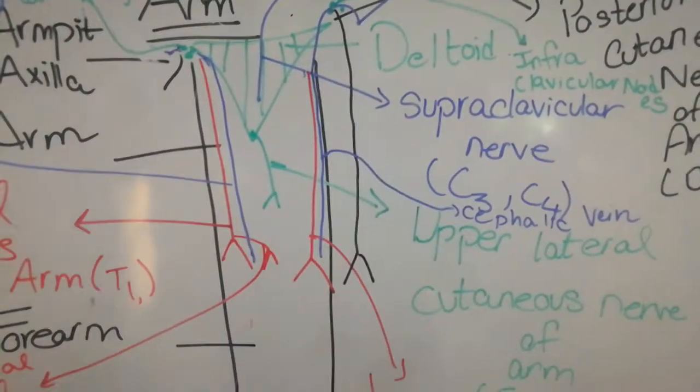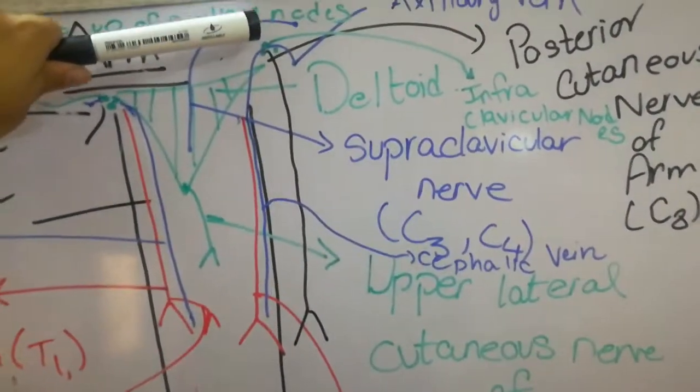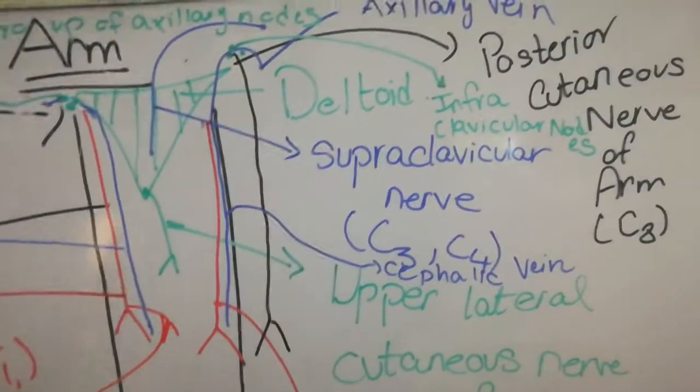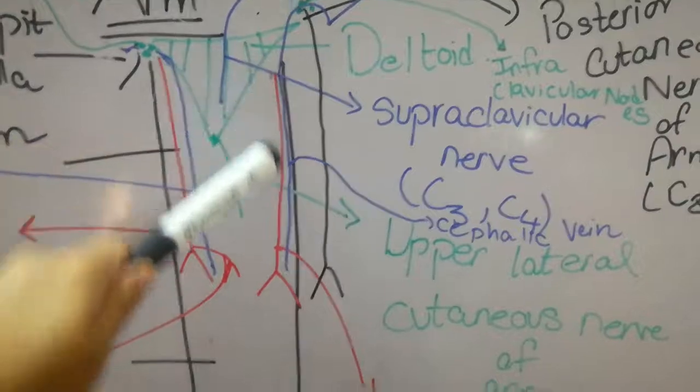These are the lymph nodes that are going to drain them, and those lymph nodes that drain the lymph from the lateral side of the arm by means of the cephalic vein are called the infraclavicular group of nodes.